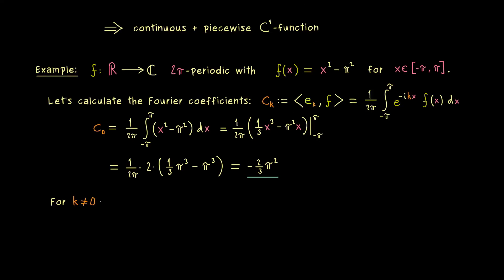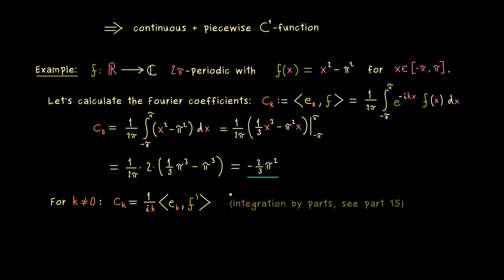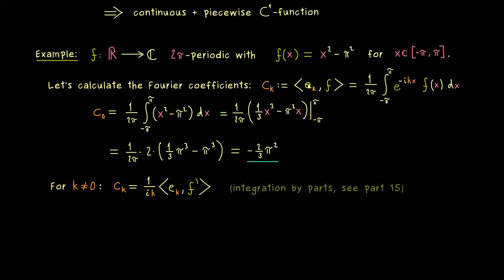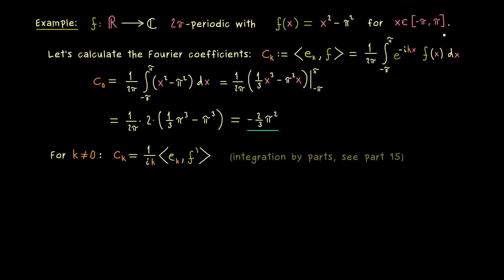In the next step we calculate all coefficients c_k for non-vanishing k. This is the harder case where we need integration by parts. From the last video we already know that integration by parts brings us to the formula 1 over (ik) times the inner product ⟨e_k, f'⟩. This formula works because f is differentiable on the whole interval -π to π and f is continuous on all of ℝ.